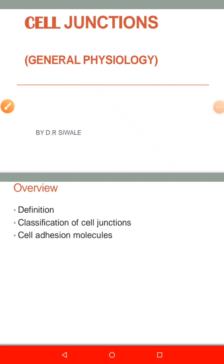Welcome to another lecture on the general physiology of the cell. In this lecture we are going to look at cell junctions. We'll start by defining what a cell junction is. A cell junction is the connection between neighboring cells, or the contact between the cell and the extracellular matrix. The other name for cell junction is also called the membrane junction.